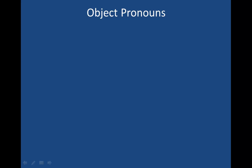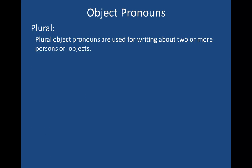Pronouns. Object pronouns. Plural. Plural object pronouns are used for writing about two or more persons or objects. Us, you, and them are all plural object pronouns.